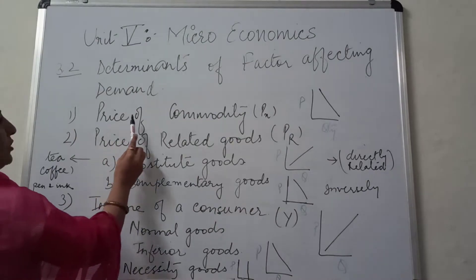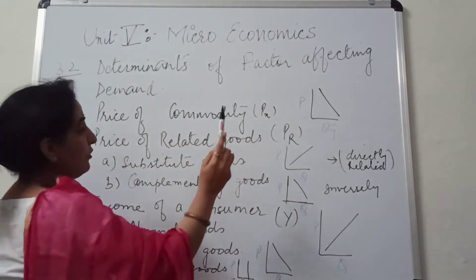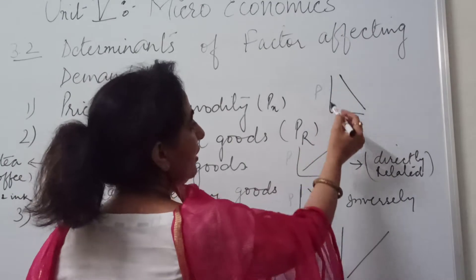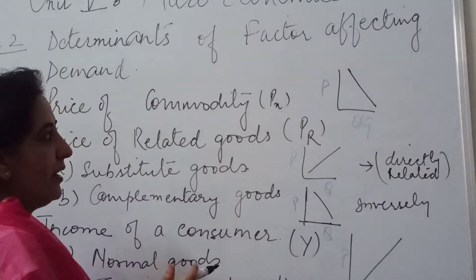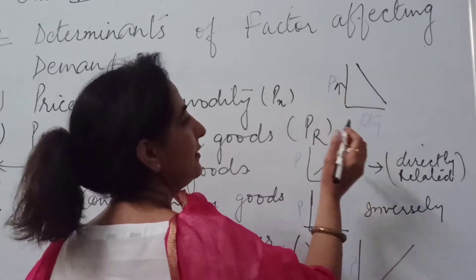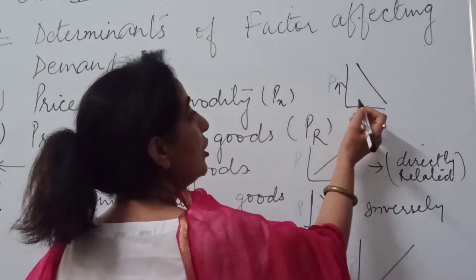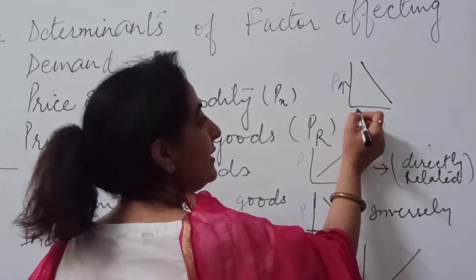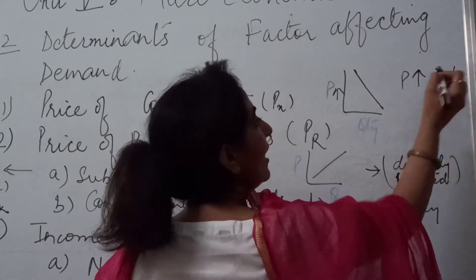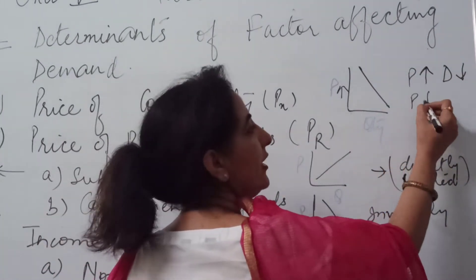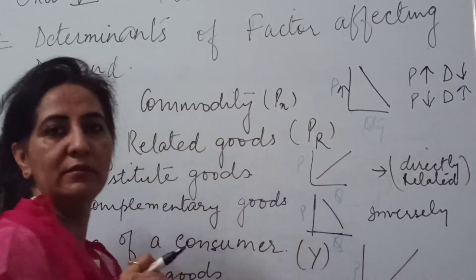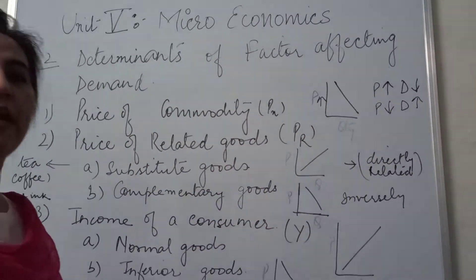The first factor is price of the commodity, which is denoted by PX. We will show it with the help of a diagram. When price of a commodity increases, the demand for the product goes down. Price increases — demand goes down. Price reduces — demand goes up. There is an inverse relationship.